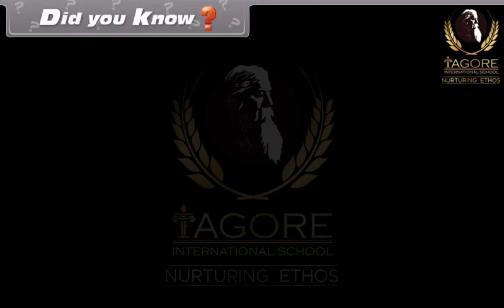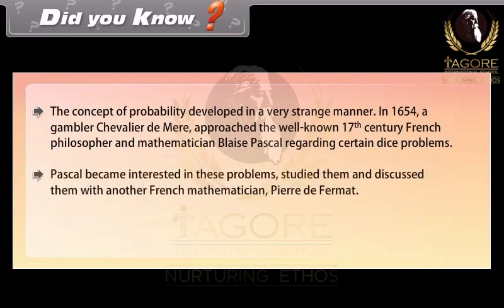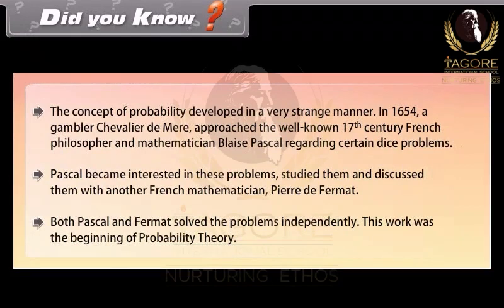Did you know? The concept of probability developed in a very strange manner. In 1654, a gambler, Chevalier de Mer, approached the well-known 17th-century French philosopher and mathematician, Blaise Pascal, regarding certain dice problems. Pascal became interested in these problems, studied them, and discussed them with another French mathematician, Pierre de Fermat. Both Pascal and Fermat solved the problems independently. This work was the beginning of probability theory.